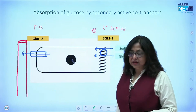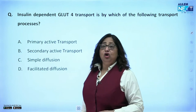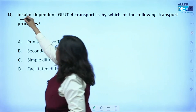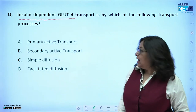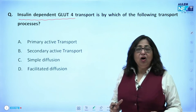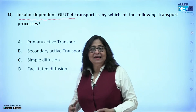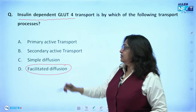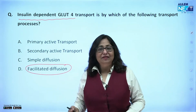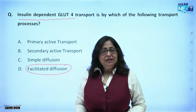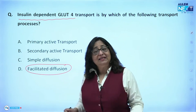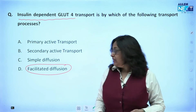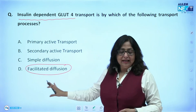The next point: insulin-dependent GLUT is GLUT-4. GLUT-4 is present on adipocytes and on skeletal muscle cells and cardiac muscle cells. It is an example of facilitated diffusion. Remember, facilitated diffusion is passive — it does not require energy. The difference between facilitated diffusion and simple diffusion is that in facilitated diffusion there is a carrier protein involved, but it is still passive and does not need energy.